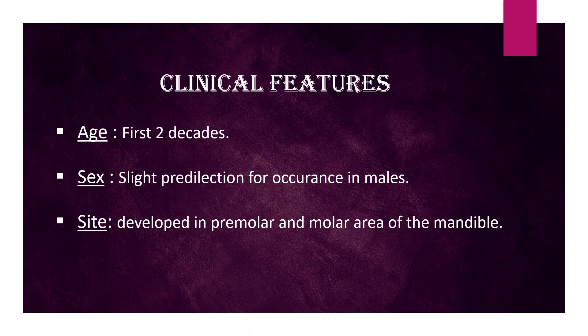Clinical features. Age of occurrence is under 20 years, with 40 percent of patients under the age of 10 years. It is most common in younger patients, that is in the first two decades. Sex: slight predilection for occurrence in males.